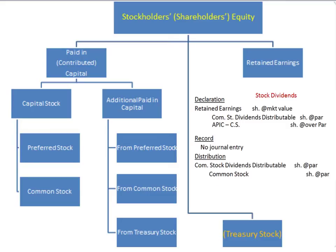First of all, it's very important to understand that regardless of whether dividends were declared and paid out in cash or you distributed stock dividends, they will come out of retained earnings. It's not some rich uncle overseas that will give the dividends on your behalf — it will come out of retained earnings. So your retained earnings will go down as a result of stock dividends. Then you will give out common stock, and as a result your common stock will go up.